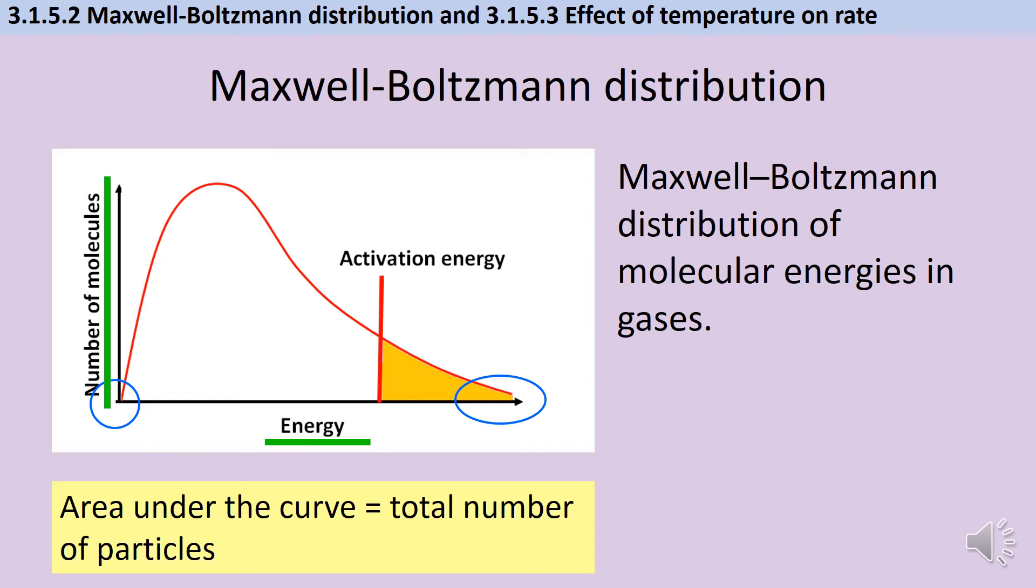On this graph we can label the most probable amount of energy which you can think of as being a bit like the mode. If I was to pick a particle at random that's the most likely amount of energy it would have. This is going to be the peak of the graph.